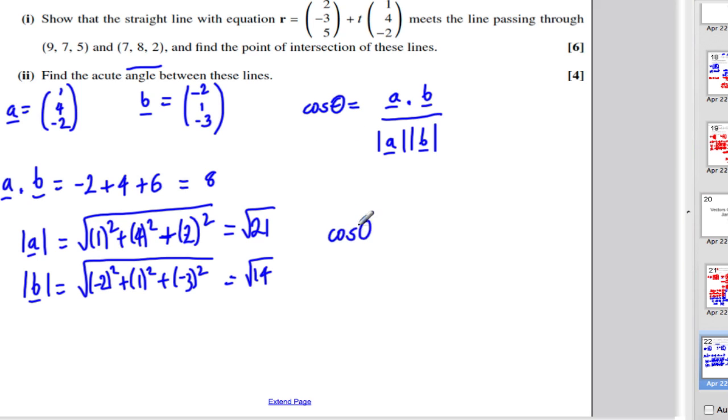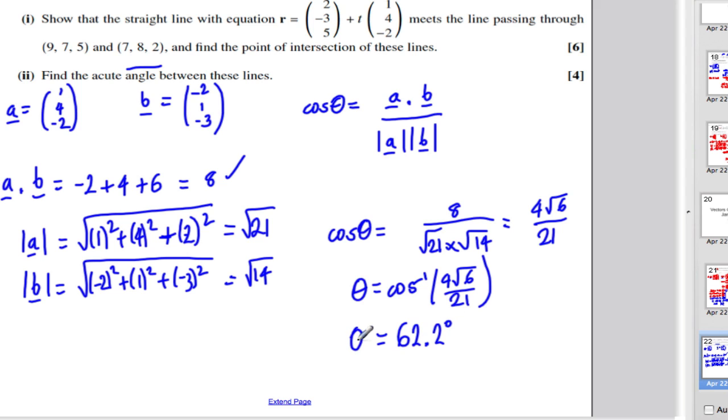Now the cosine of the angle then, plugging this all in, the cosine of the angle between these vectors must be 8, a dot b here, divided by root 21 times root 14. And that, with my calculator, is 4 root 6 over 21. To get the angle, I take the inverse cos of 4 root 6 over 21. And that gives me 62.2 degrees. That's to three significant figures and it's an acute angle as required.